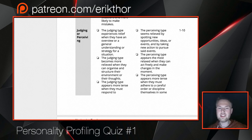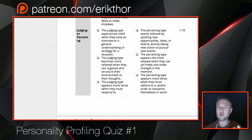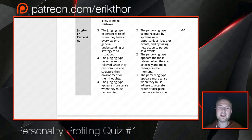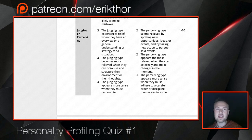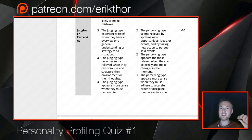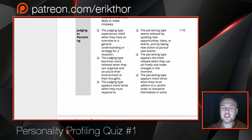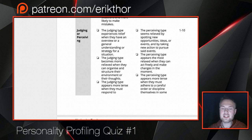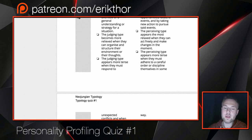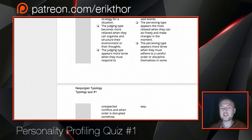When studying whether a person is a judging or perceiving type: the judging type experiences relief when they have an overview, a general understanding, or a strategy to deal with a situation in advance. The perceiving type seems most relieved by spotting new opportunities, ideas, or alternatives — adapting, adjusting, and acting logically in accordance with the smartest move in each particular moment. The judging type becomes more relieved when they can organize and structure their environment or thoughts, and appears most relaxed when things are in order.